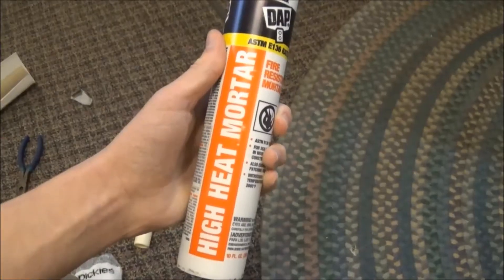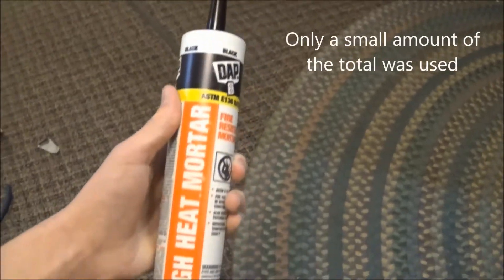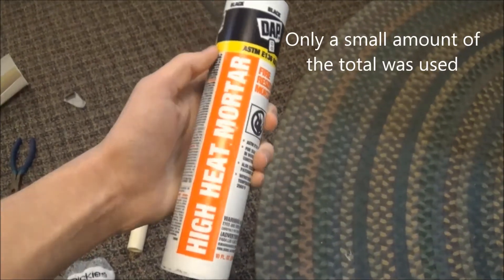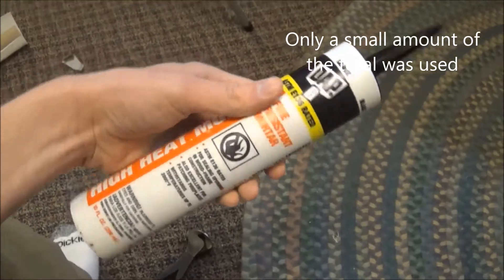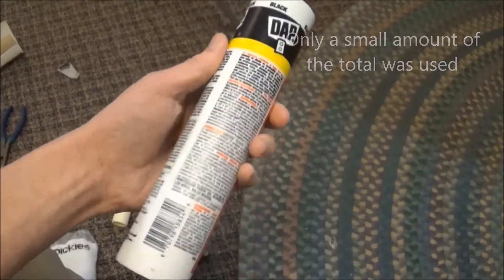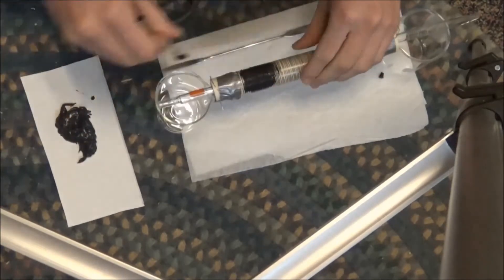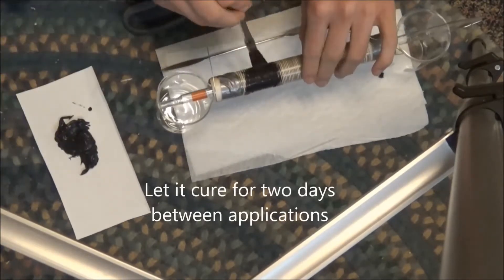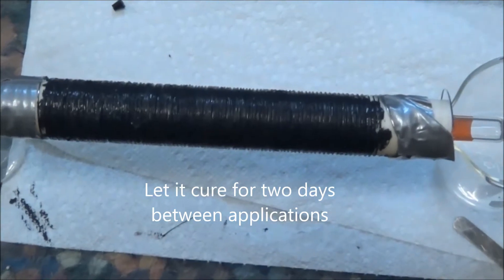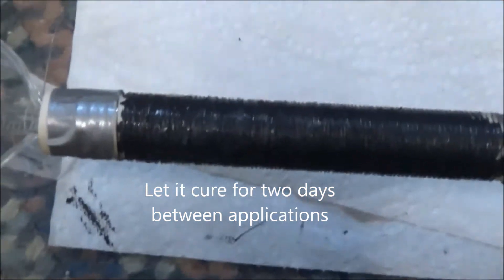The mortar is this high heat mortar. It cost about $5 for a large tube and it's rated up to 2000 degrees fahrenheit or 1100 celsius. I painted it on with a brush. The first coat is a thin one to keep all the wire in place, and after that I added a second thicker coat to completely cover everything.